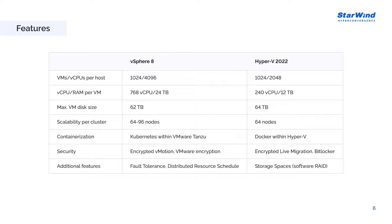If we consider maximum disk size, Hyper-V can offer a 64 terabyte VHDX disk, with a 72 terabyte VM disk on the vSphere side. In terms of VM resource configuration, vSphere offers a more adjustable way to configure CPU and RAM. For scalability per cluster, vSphere offers from 64 to 96 nodes per cluster, with 64 nodes on the Hyper-V side.